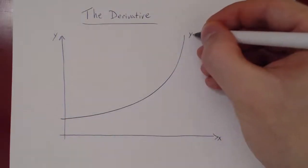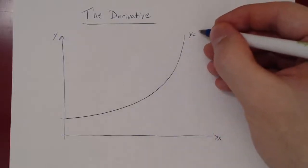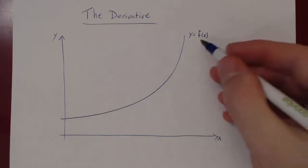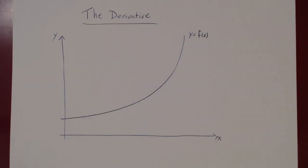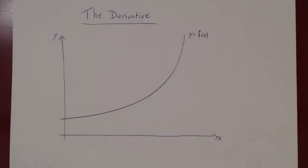The equation of the curve is given by y equals f(x), where f is some function of x. We know how to define the slope of a straight line — it's the change in y over the change in x. The question is, can we define the slope of a function, of a curve, that is not a line?